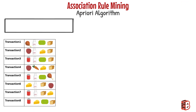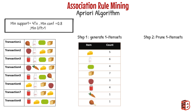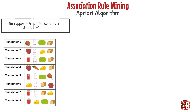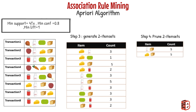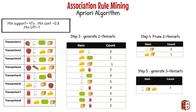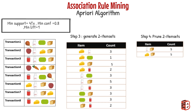Keeping in mind the requirements — support of at least 50% means the item set should appear in at least four transactions, confidence of at least 80%, and Lift greater than one. The first step is to generate all possible item sets of size one and calculate the count of transactions for each item. Then pruning takes place, discarding all items with a transaction count below four. From the pruned dataset, we generate all possible item sets of size two, and pruning happens again to discard item sets that don't meet the required support. Then we generate all possible item sets of size three, but we find they don't meet the support requirement, so we discard them and stop at item sets of size two.